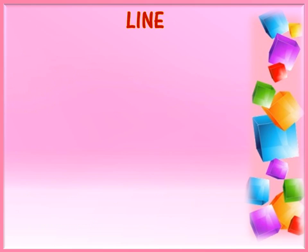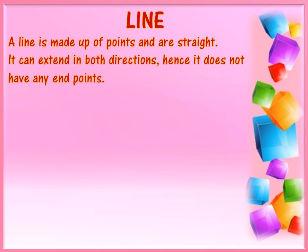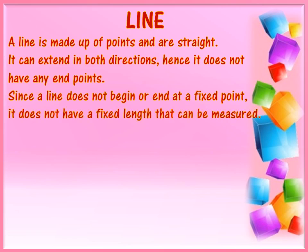Line. A line is made up of points and is straight. It can extend in both directions. Hence, it does not have any end points. Since a line does not begin or end at a fixed point, it does not have a fixed length that can be measured. In the given examples, the arrows at the opposite ends of each line denote that the line can extend in both directions.